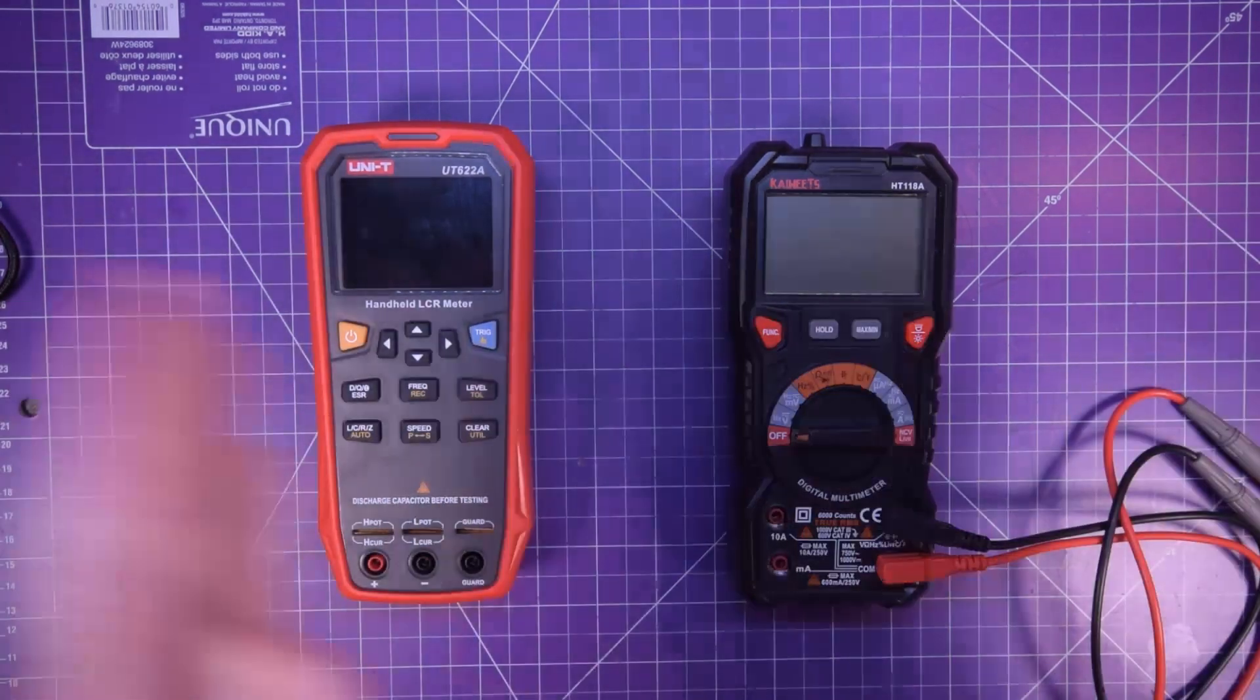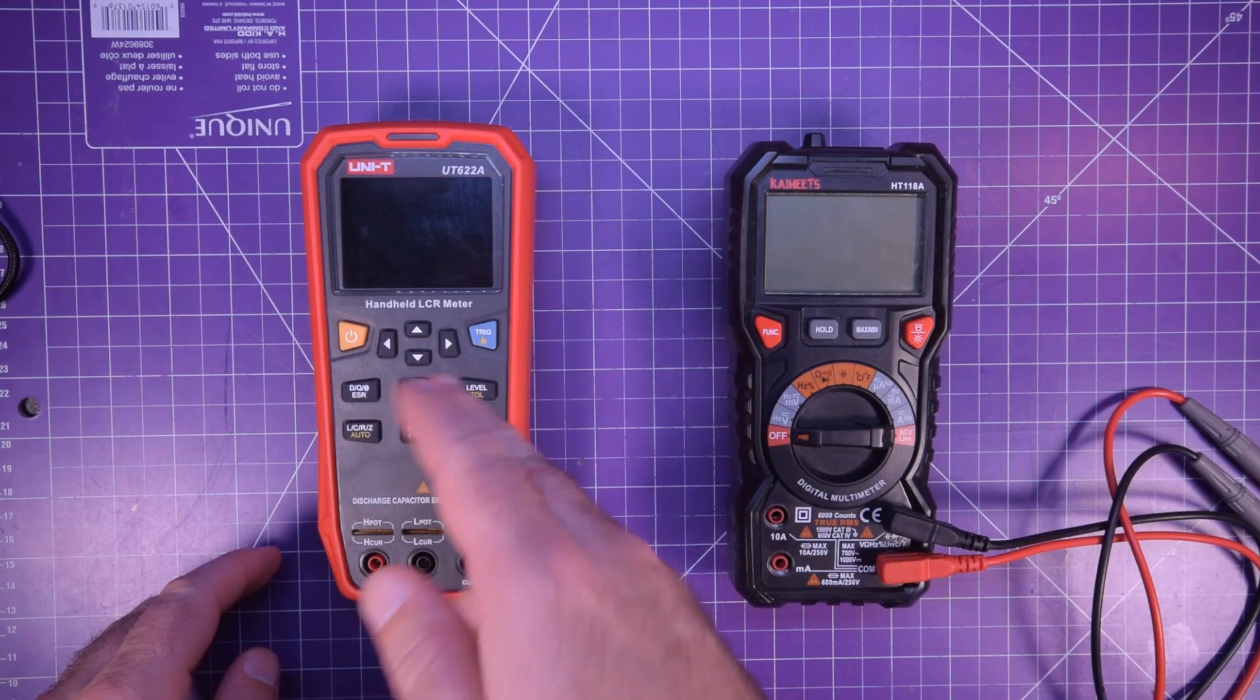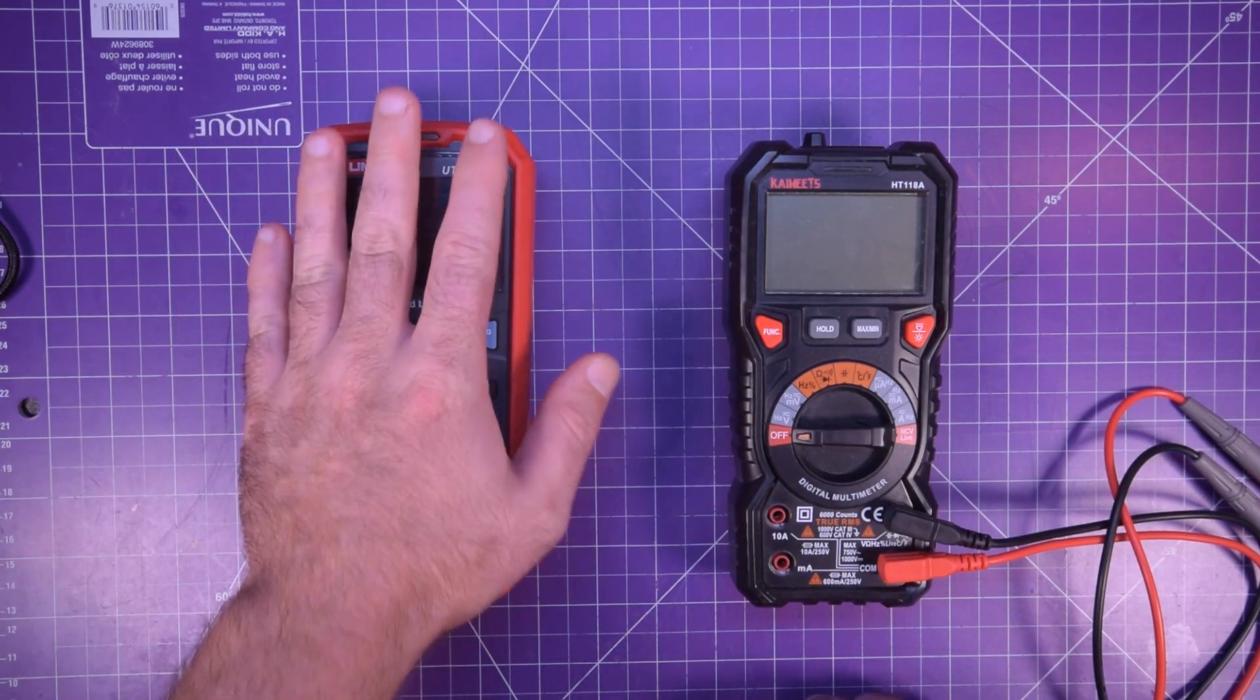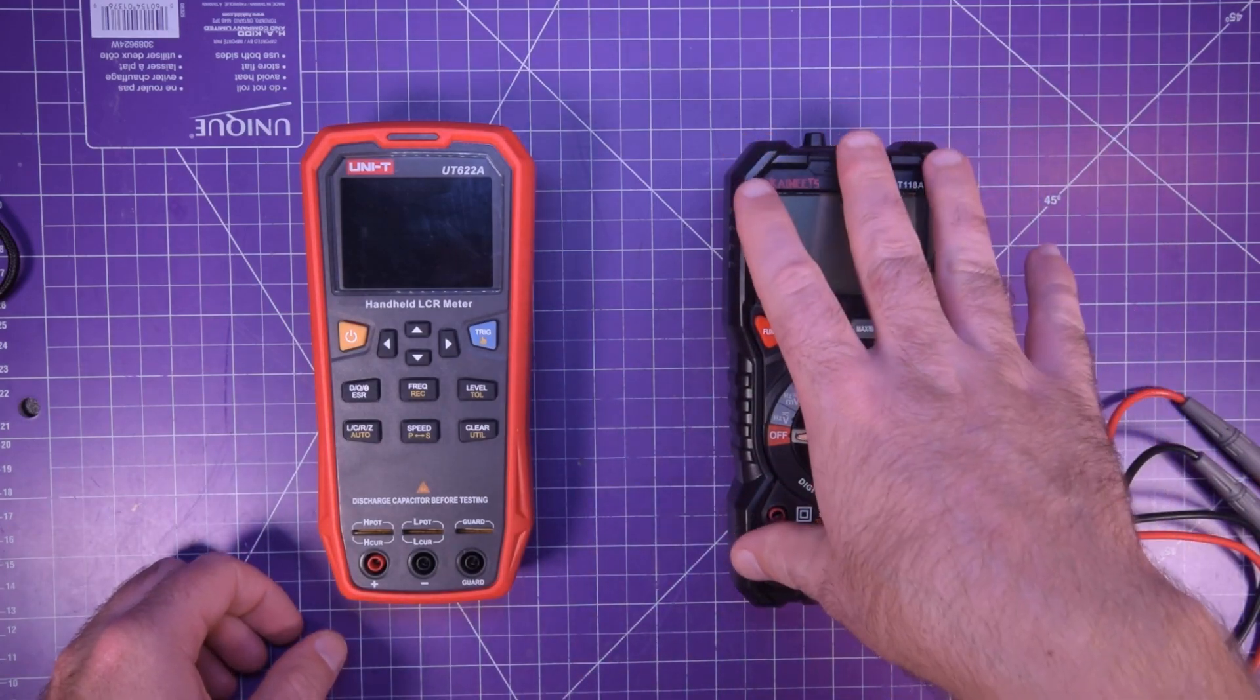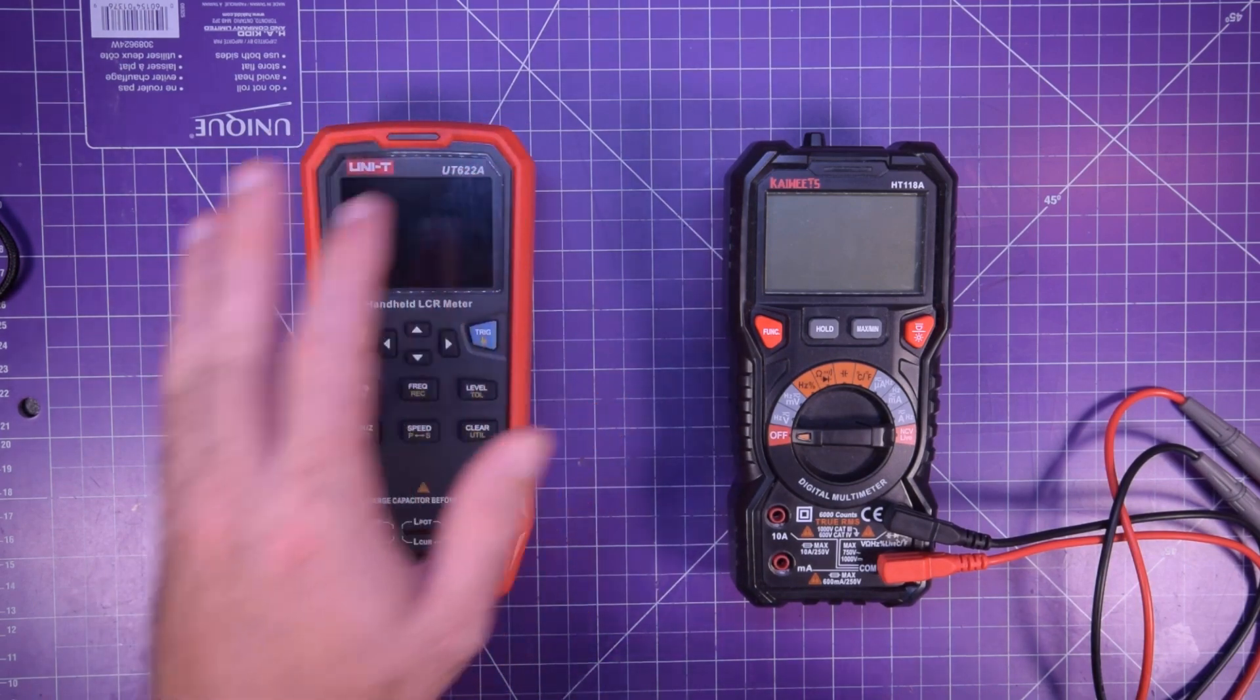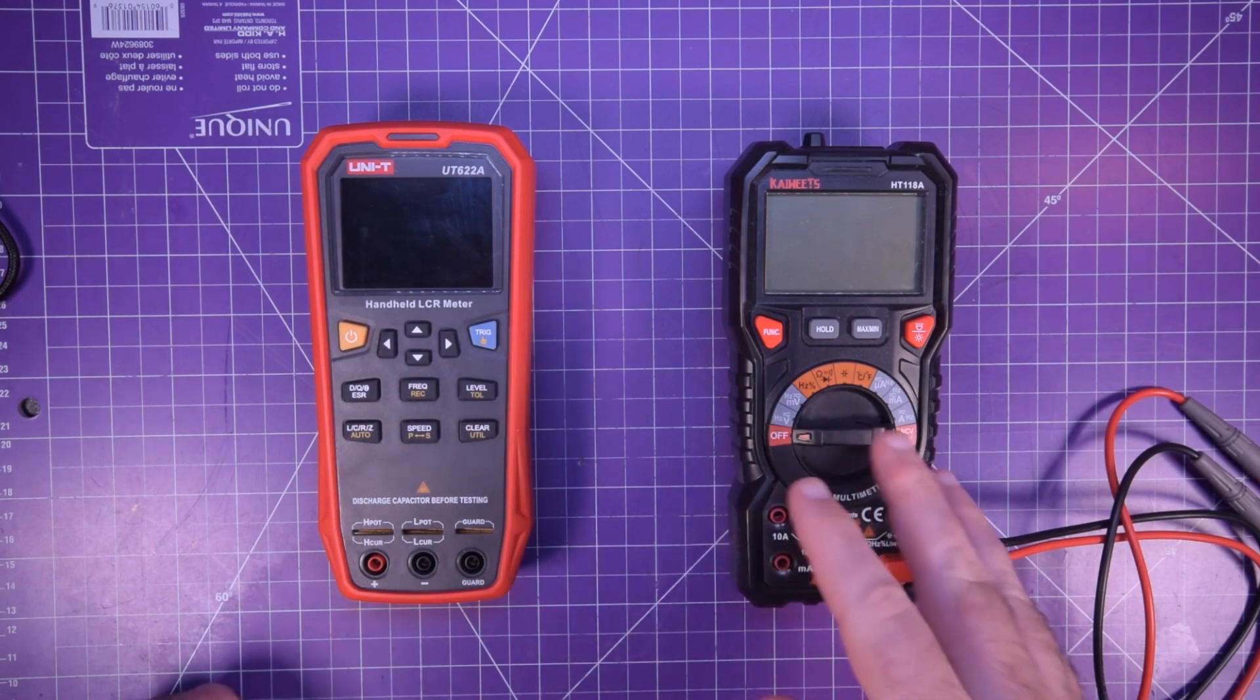In fact, there is even a little bit of overlap in their functions. This one here can check resistances, that's the R in LCR. This one can check resistances. This one here can check capacitance, the ability of a capacitor to store charge. This one can also check capacitance. So basically in the LCR, the C and the R in this one are already covered by this one.